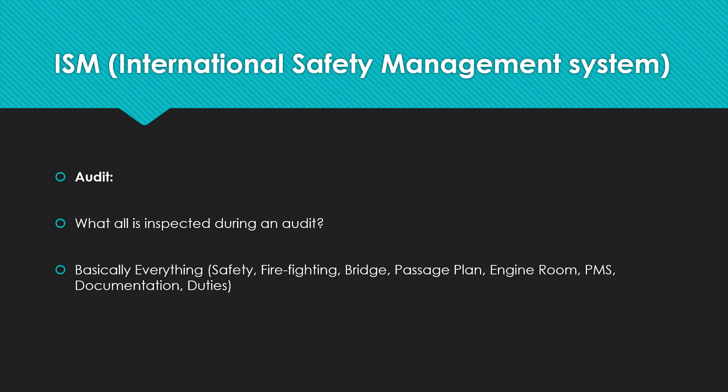ISM audits are carried out internally by the company and also by an external auditor. External auditors can check not only ISM compliance but also your compliance with ISPS — the International Ship and Port Facility Security Code. You must ensure that your safety systems, firefighting systems, bridge, engine rooms, passage plans, planned maintenance schedules, and documentation are all in place. Your ship should demonstrate that actions are being taken with the safety and security of the ship in mind. Check your documentation first — whether for the bridge or engine room — and ensure your passage plans can be reproduced if required.